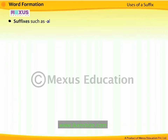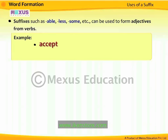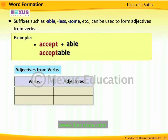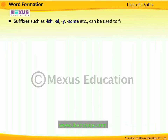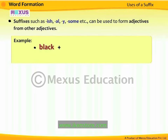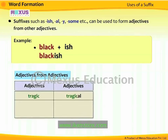Suffixes such as -able, -less, -some, etc. can be used to form adjectives from verbs. For example, the verb 'accept' plus '-able' forms 'acceptable.' Thus, 'care' becomes 'careless' and 'tire' becomes 'tiresome.' Suffixes such as -ish, -al, -y, -some, etc. can also be used to form adjectives from other adjectives. For example, 'black' plus '-ish' forms 'blackish.' Other examples: 'tragic' becomes 'tragical,' 'sick' becomes 'sickly,' and 'whole' becomes 'wholesome.'